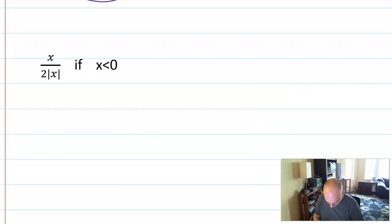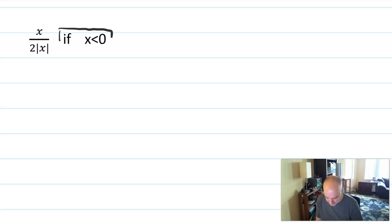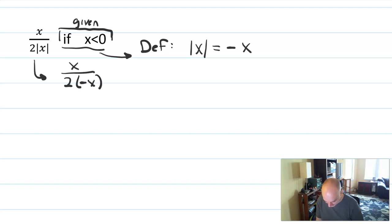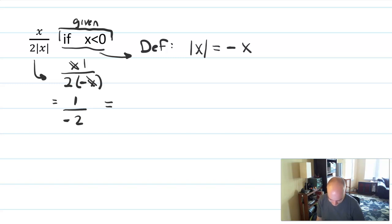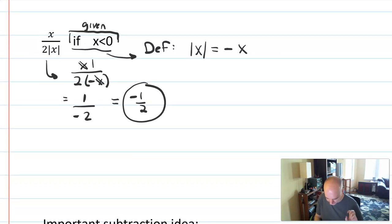The last flavor of problem: a more complicated expression with x — say x over two times absolute value of x. This is totally something we could ask you to graph or work with in Math 4. We're also given that x is less than zero. Since x is less than zero, the definition says absolute value of x equals opposite x. I can use this to replace absolute value of x with negative x. So this simplifies to x over two times negative x. Then x over negative x reduces to negative one, leaving one over negative two, or negative one half. That's how I would give that answer — a little fraction work and the definition of absolute value.